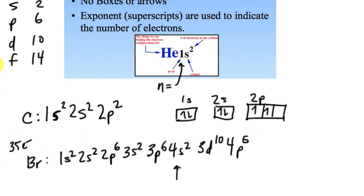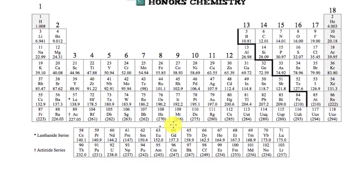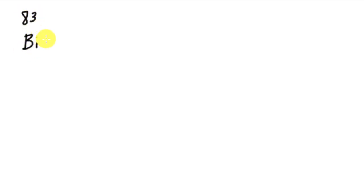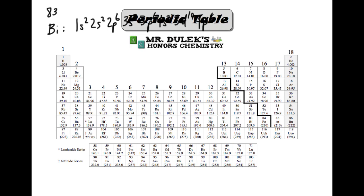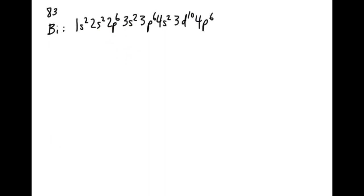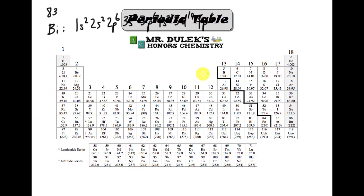Let's do bismuth, because that's going to cover everything — the full electron configuration with all the bells and whistles. Bismuth has 83 electrons. So let's do this one. I'll start: 1s², 2s², 2p⁶, 3s², 3p⁶, 4s², 3d¹⁰, 4p⁶ — and I'm going to stop there, because I've now stopped at krypton. That's where I'm leaving off, and it's highlighted for a reason I'll talk about in a second.